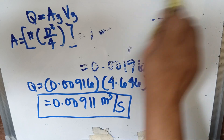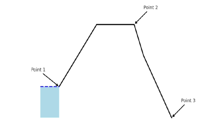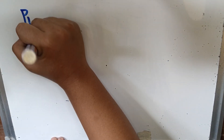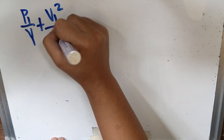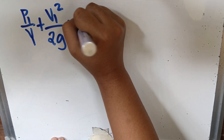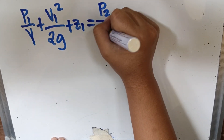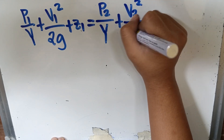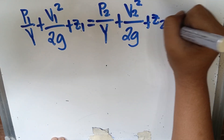Now we determine the pressure at point 2. Applying Bernoulli's equation between point 1 and point 2: P1 over gamma plus V1 squared over 2g plus Z1 equals P2 over gamma plus V2 squared over 2g plus Z2 plus head loss.